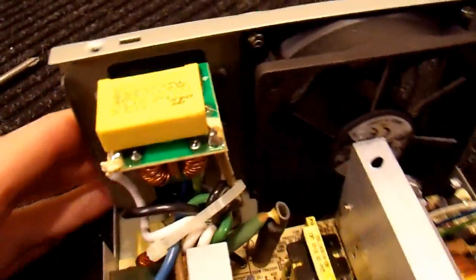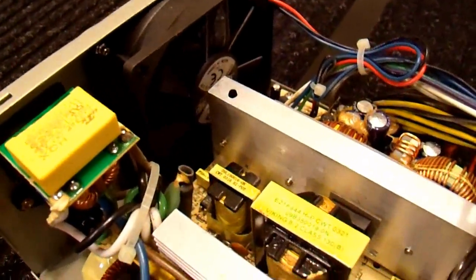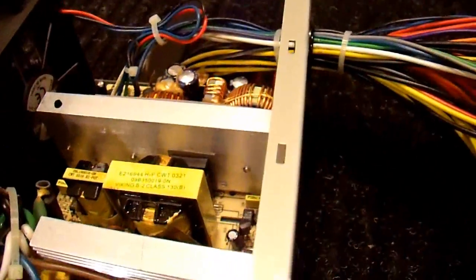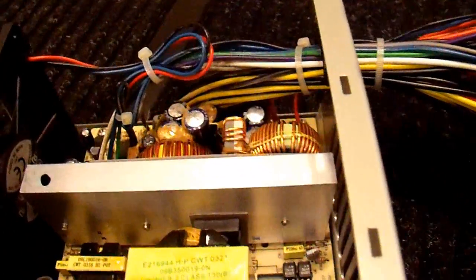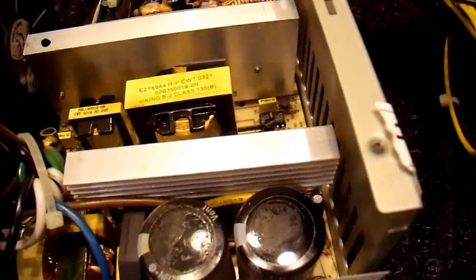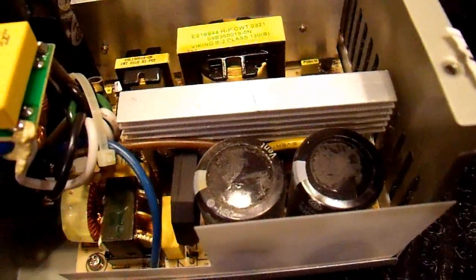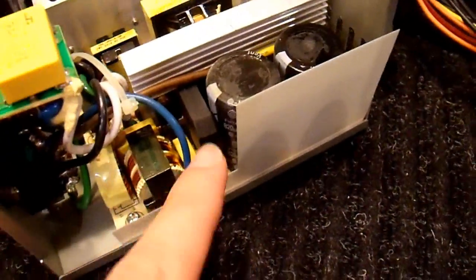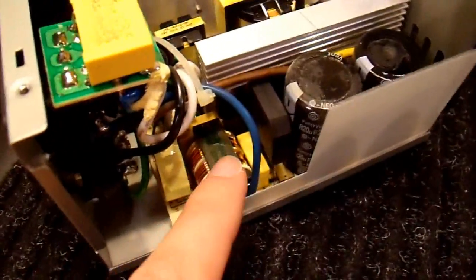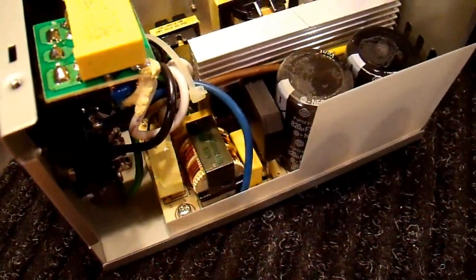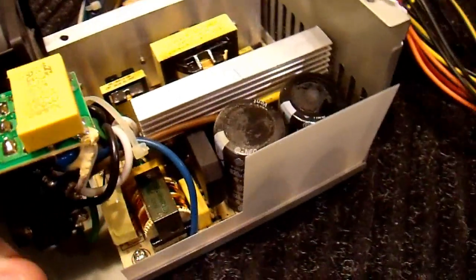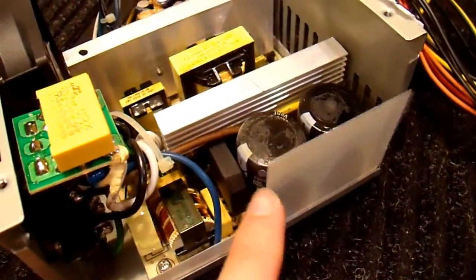So they're really worried about conducting emissions apparently. They must have had to do that to pass emission testing. The FCC controls that here in the United States, other agencies elsewhere. But normally from there it would run into a bridge rectifier, which it does here. Looks like there's another common mode choke down here. Wow, that's three of them. Anyway, so they have some input filtering.